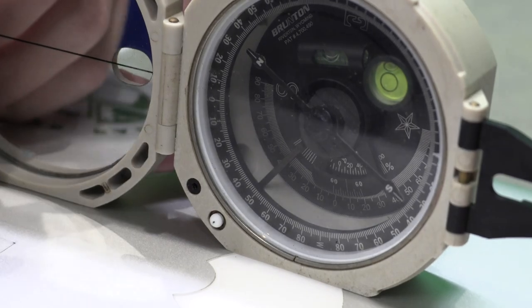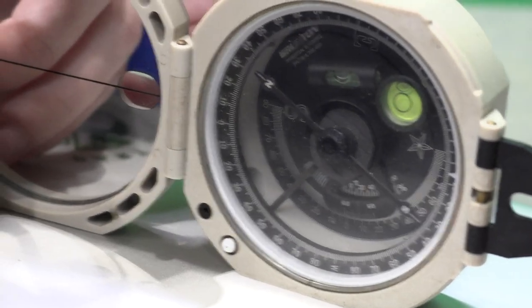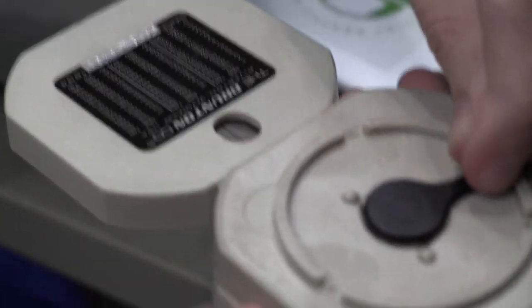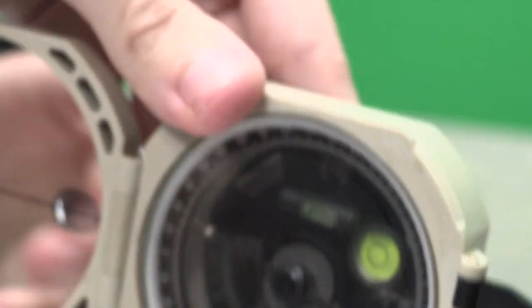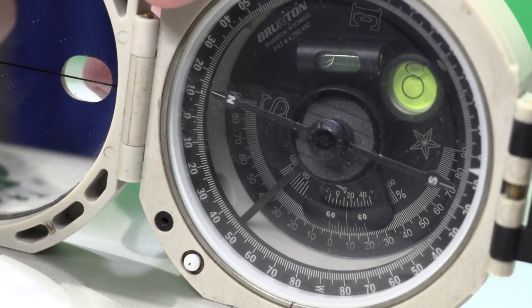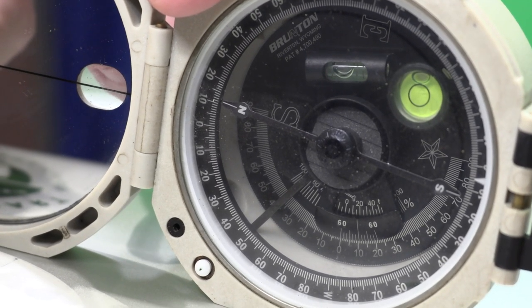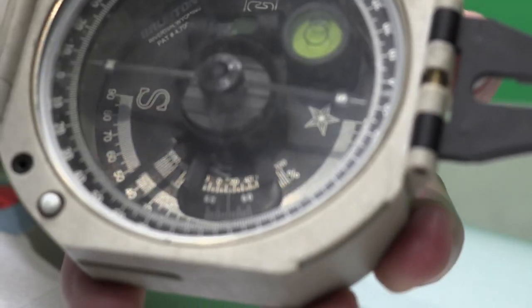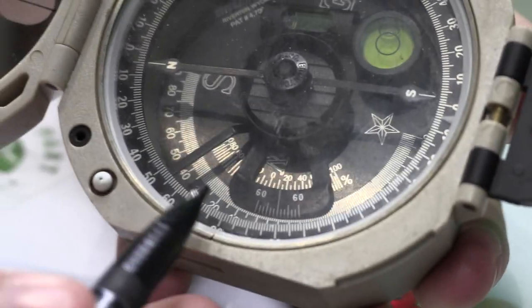You can adjust that bubble by using this little doohickey on the back, it moves and moving that moves the level. So I'll place it on the surface and adjust it. Comes out to be about 10 degrees dipping like so.